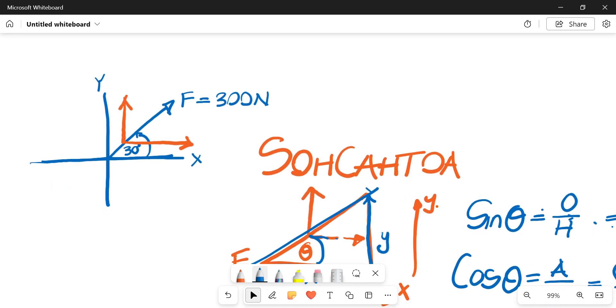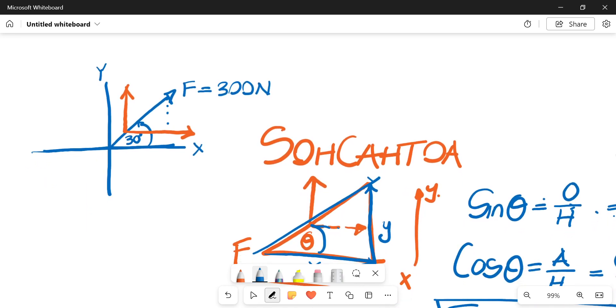So remember our imaginary triangle? We would have had an imaginary side y here, and an imaginary side x here, which is essentially now the components. So our x would be here, and we said it's our F cos of theta, then our y is our F sine of theta.